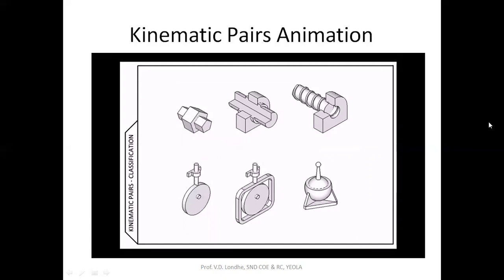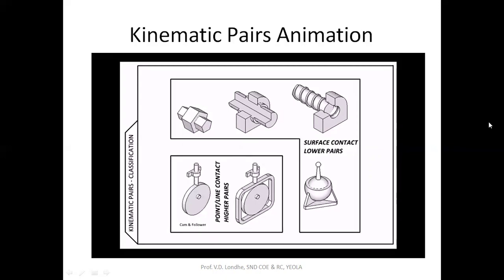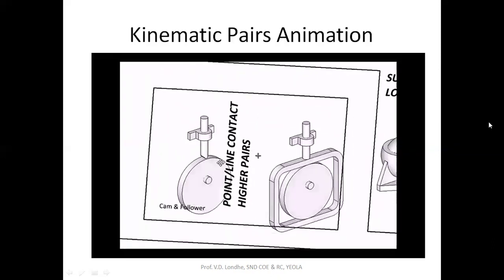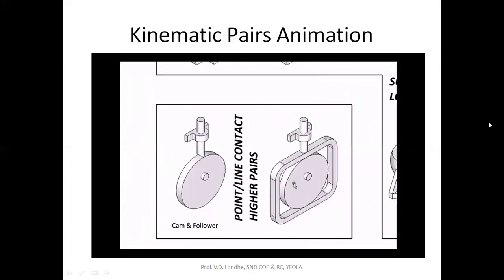The last classification is according to the contact between the two bodies. Where contact is made all over the surface — such as a prismatic, cylindrical, helical, or spherical surface — they are called lower pairs. When the contact occurs only along a line or a point, such pairs are called higher pairs. Thanks.